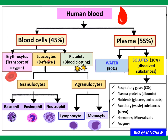Leukocytes can be further divided into two types: granulocytes that have granules in their cytoplasm, and agranulocytes that have no granules. Granulocytes can be divided into three types — basophil, eosinophil, and neutrophil — while agranulocytes can be divided into two types: lymphocytes and monocytes.